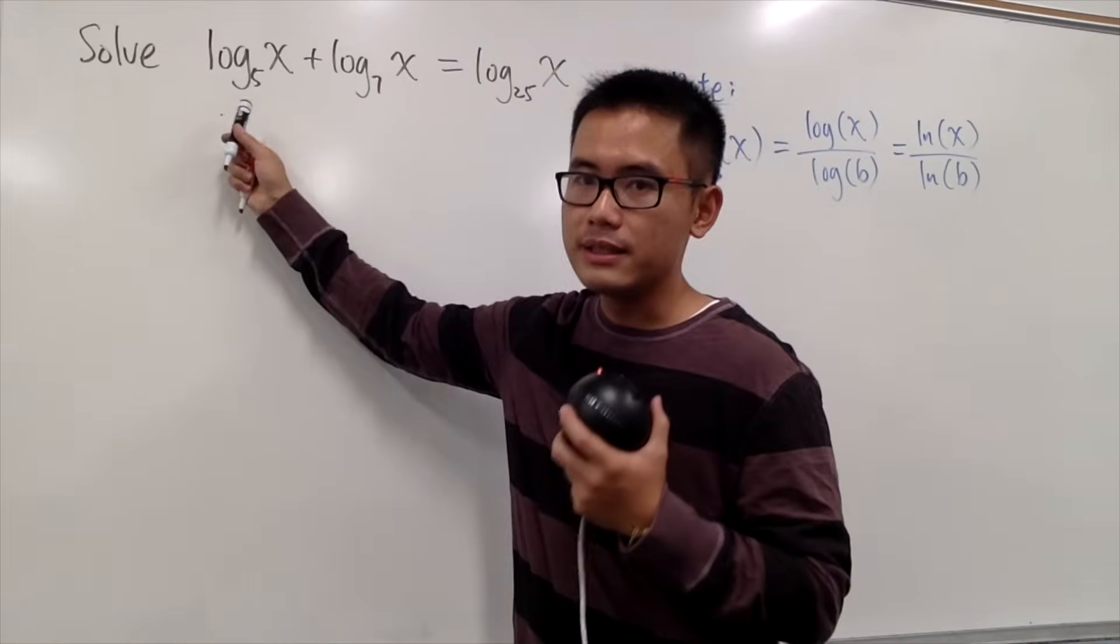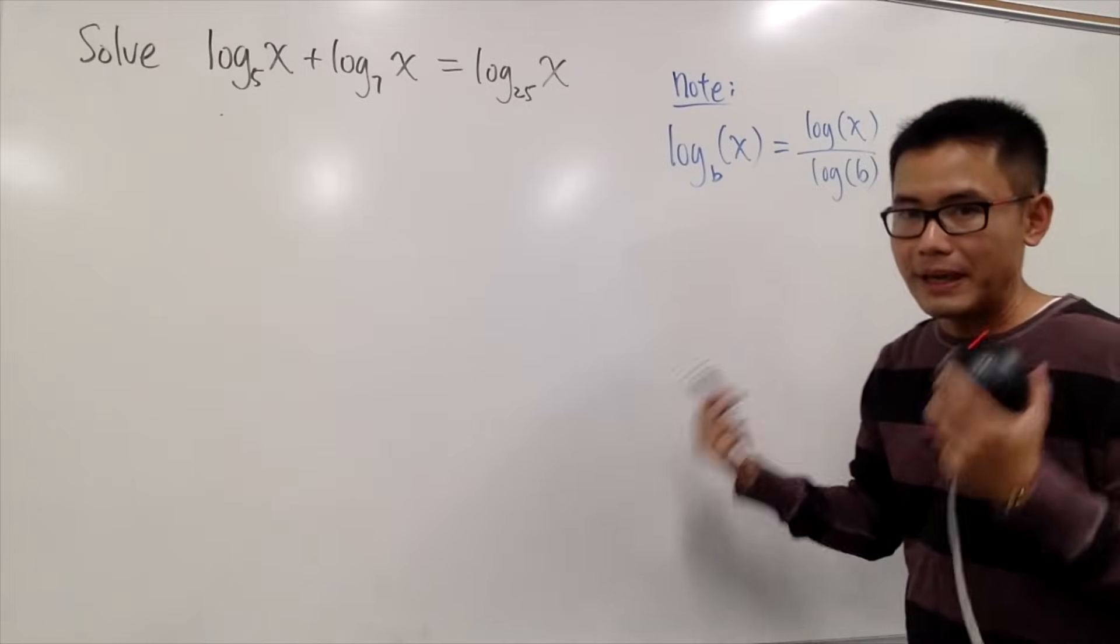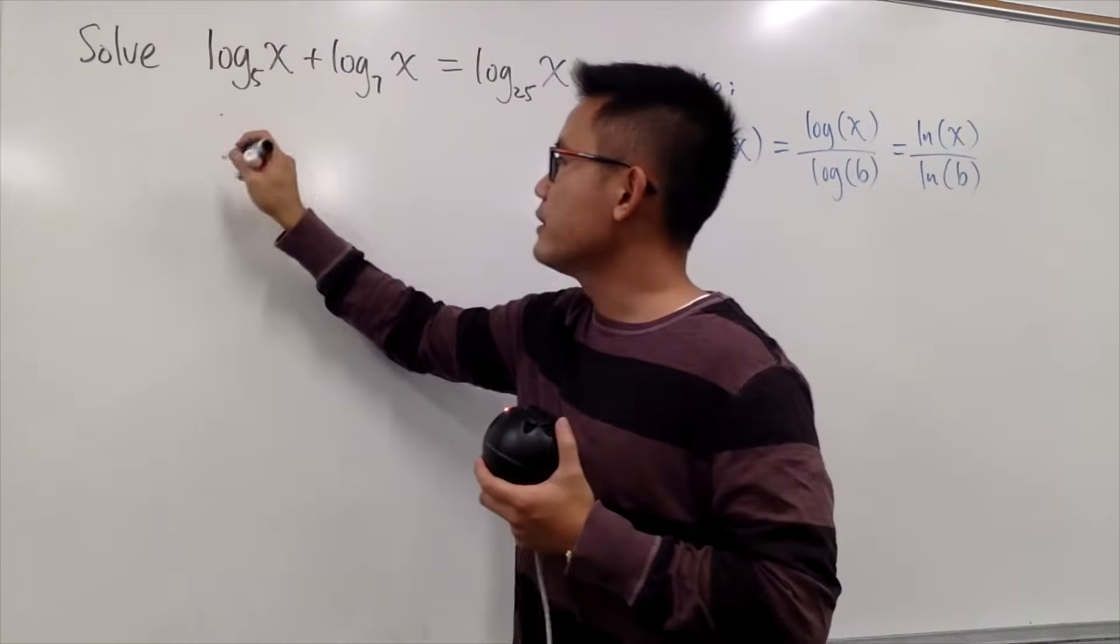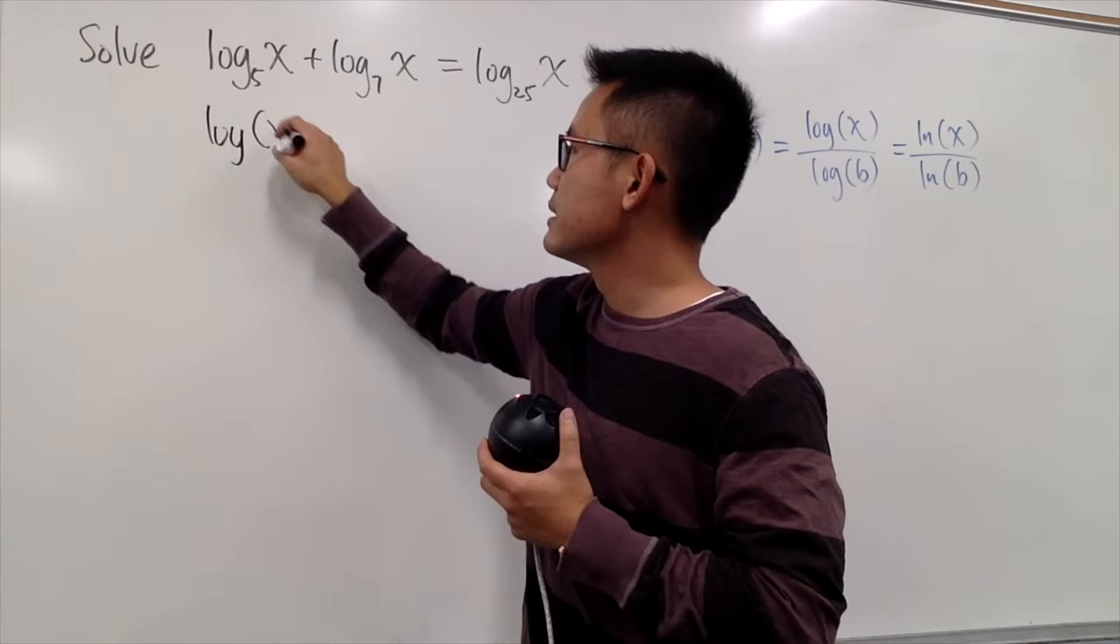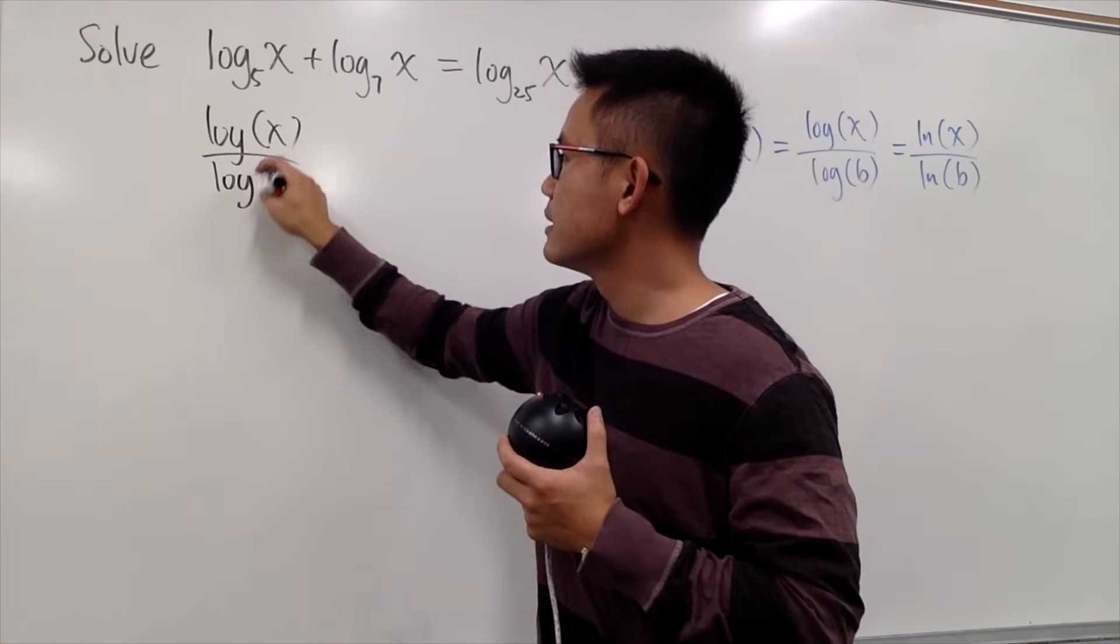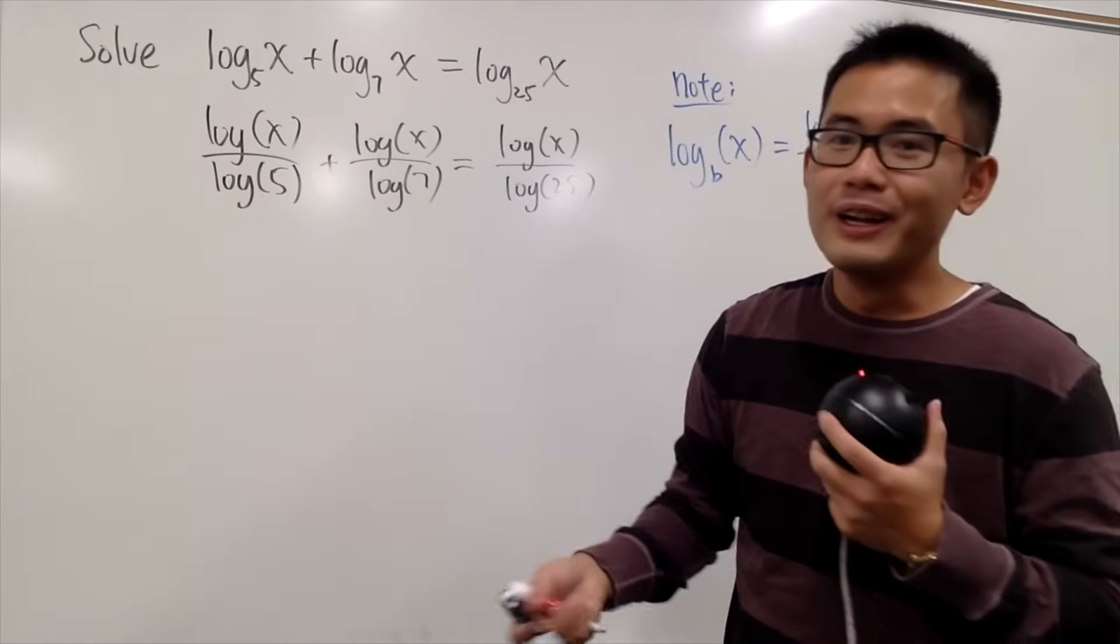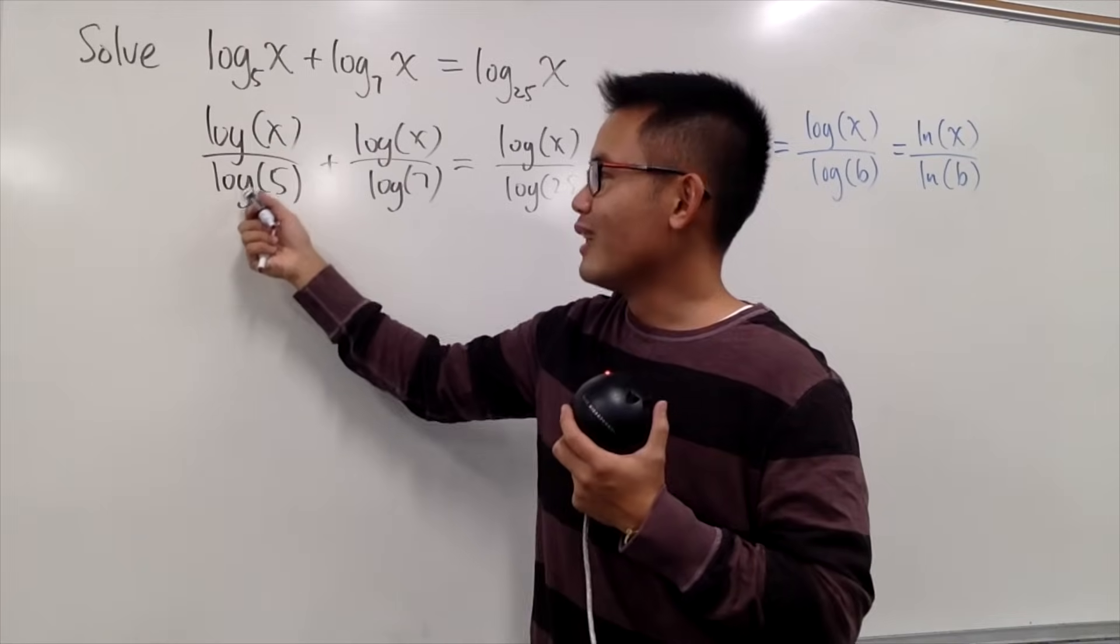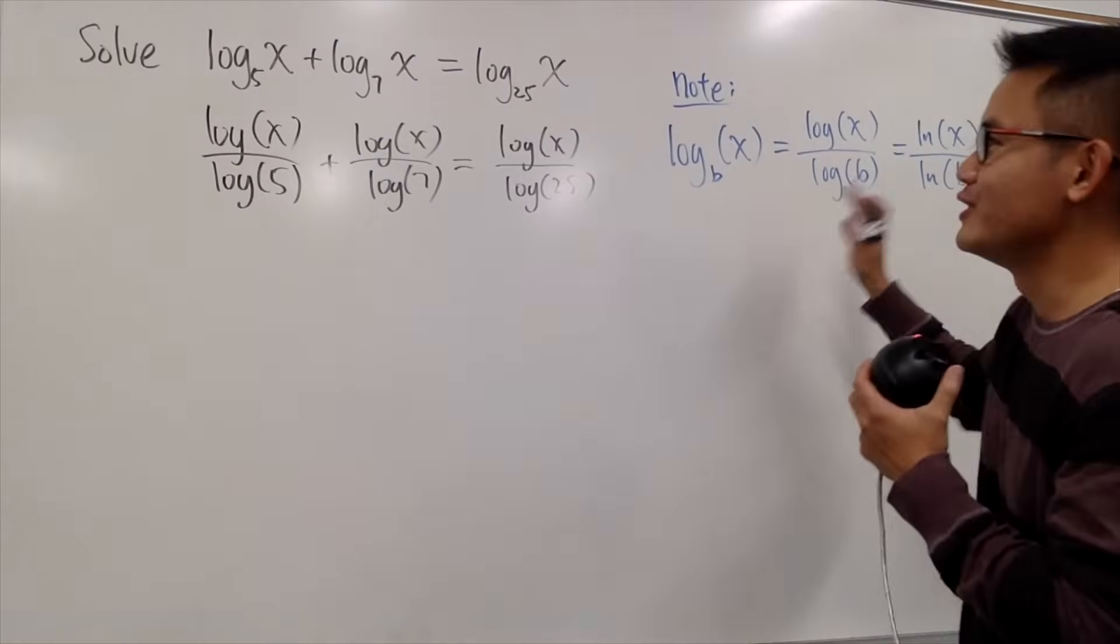So our first thing is, we have to write this in terms of log of base 10, right? For the first term, we will have log and the input is x over log of 5 on the bottom like this. And you see, as long as you are doing this consistently, it's okay. Do not put down log, log right here, and then put down ln, ln. Then you defeat the whole purpose of change the base.